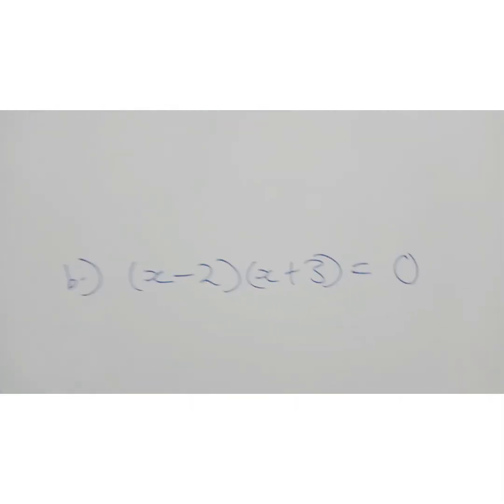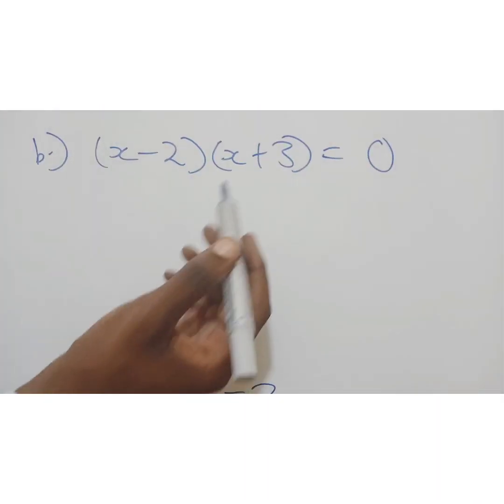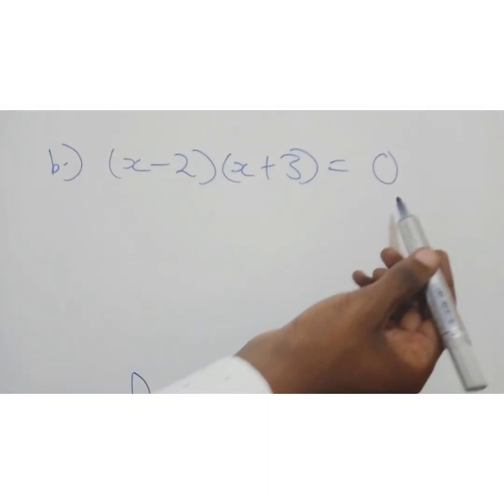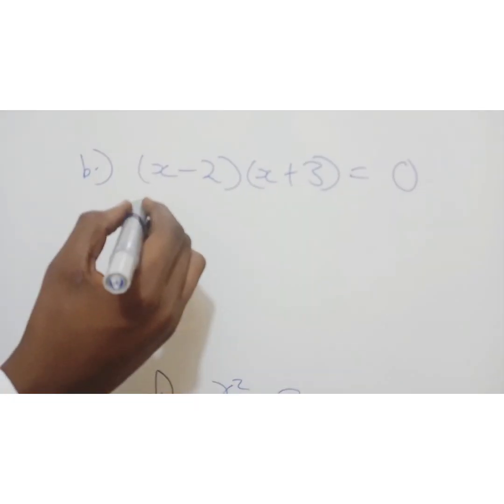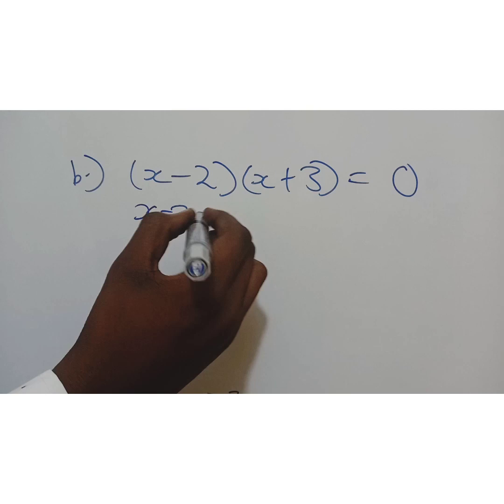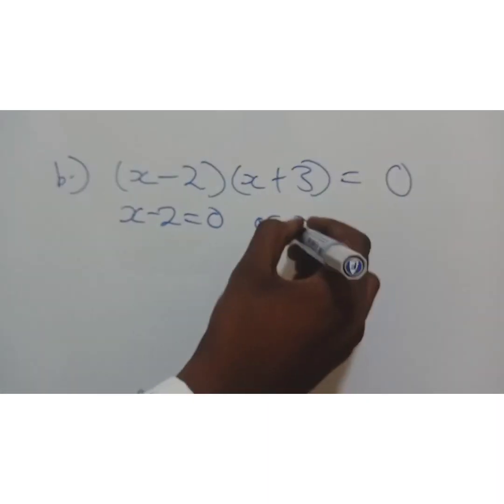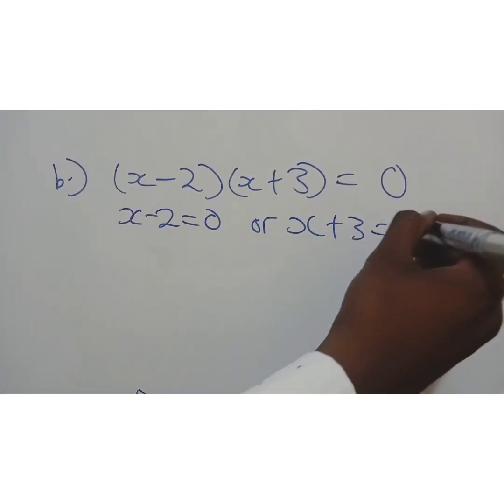We go to our second example. So x minus 2, then x plus 3, then brackets and I've equated to 0. So simple. Let's say x minus 2 equals 0, or x plus 3 equals 0.